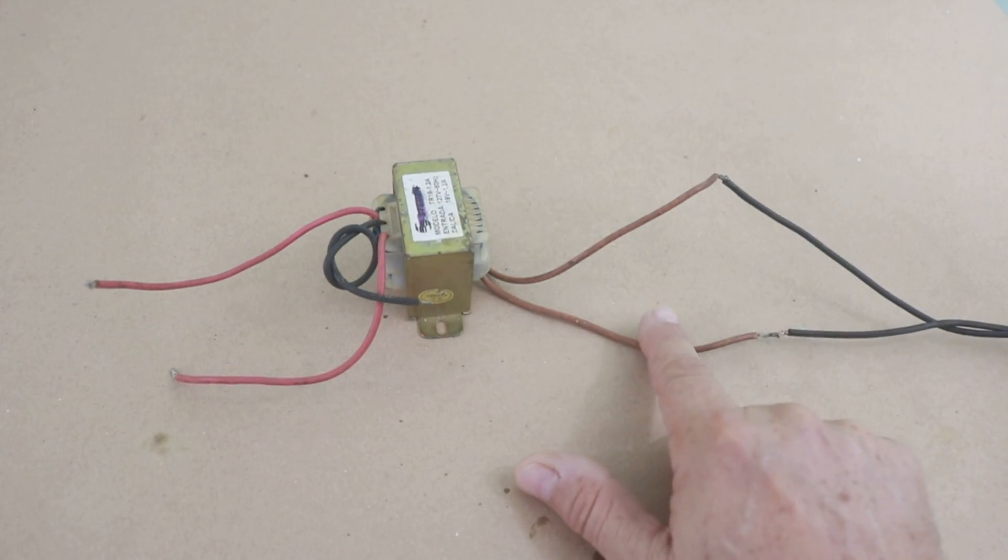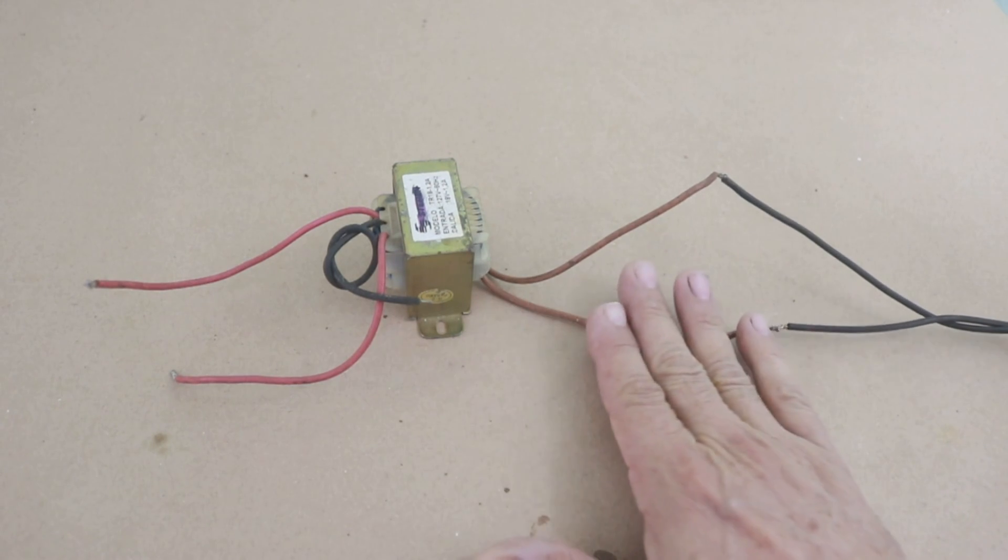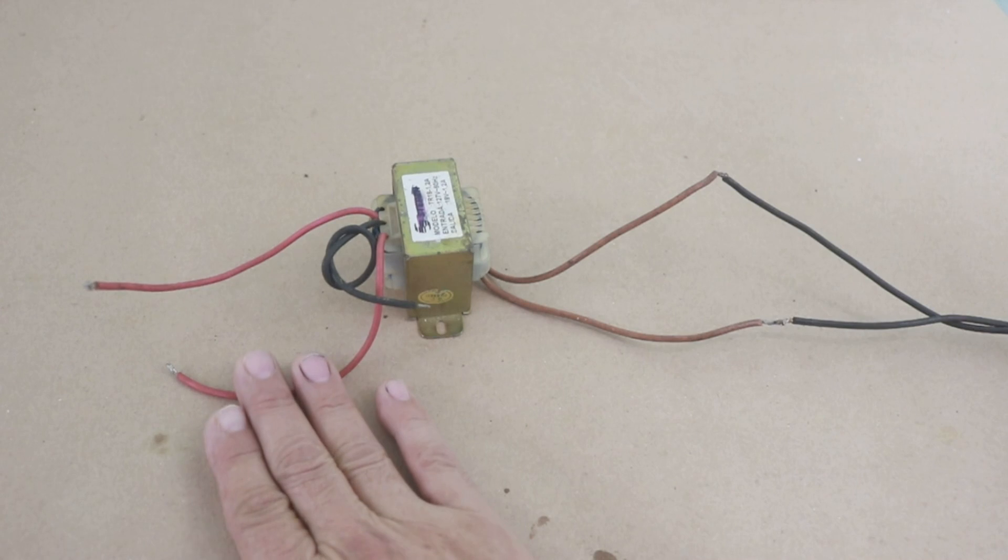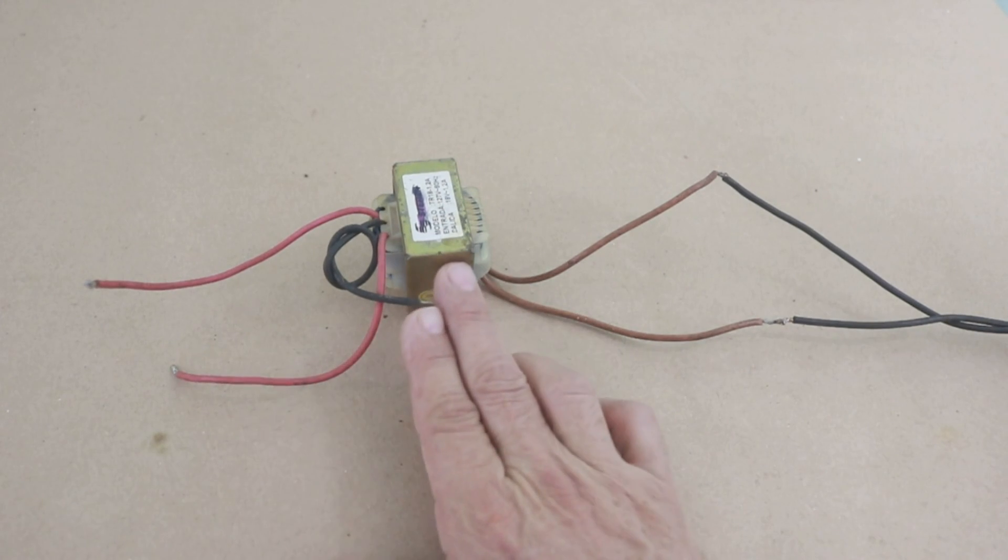Here we apply the wall power 127 volts and here we have 18 volts that is the output of this transformer.